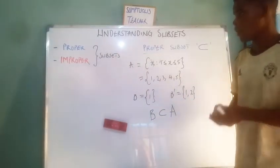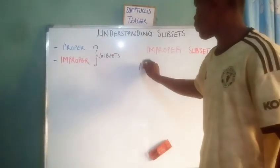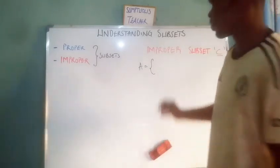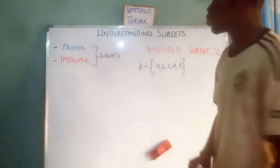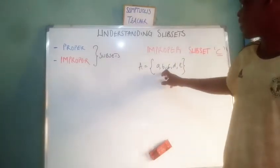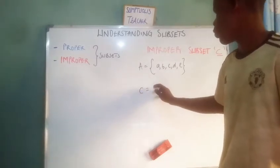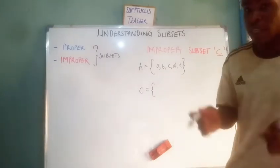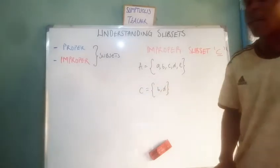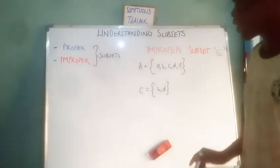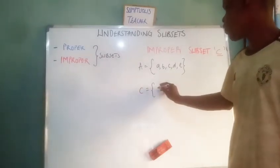Let's use another example. Say set A consists of elements a to e: {a, b, c, d, e}. If we have a set C defined as {b, d} only, then we can say that C is a proper subset of A, since C contains some but not all elements of A.